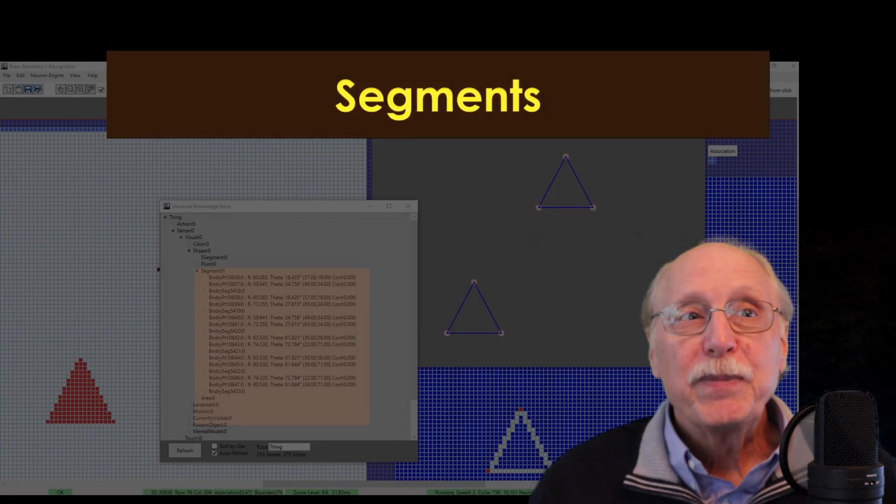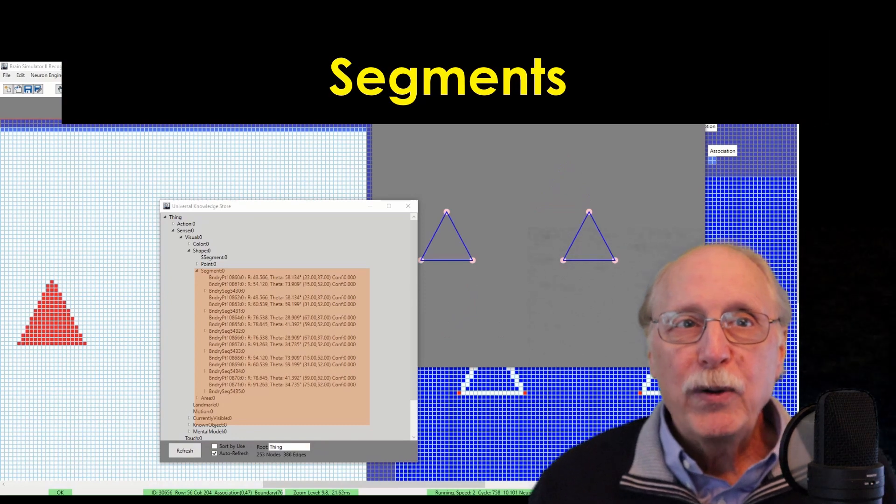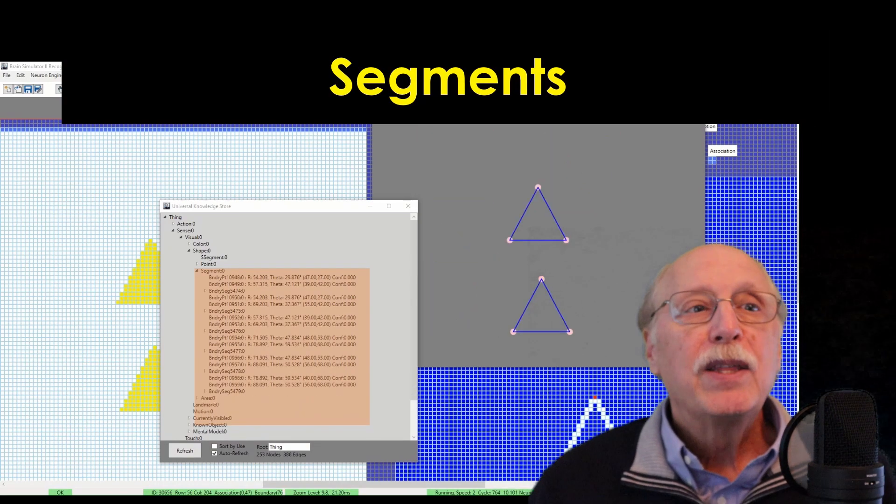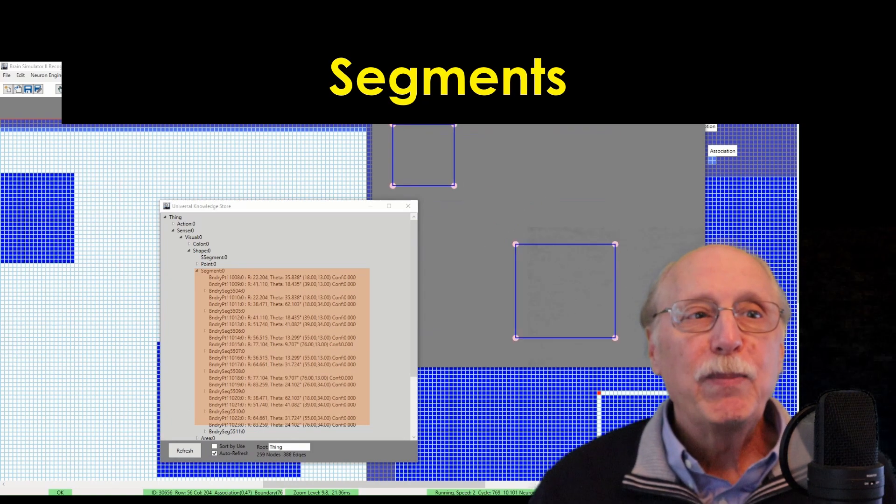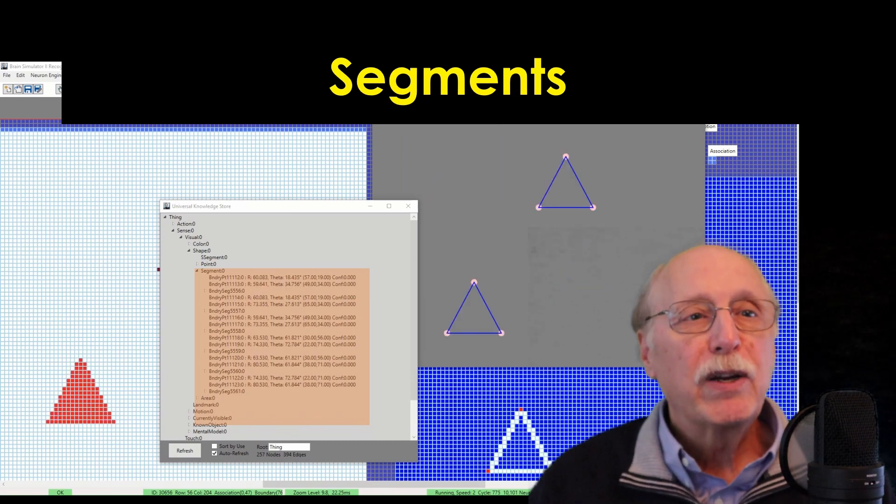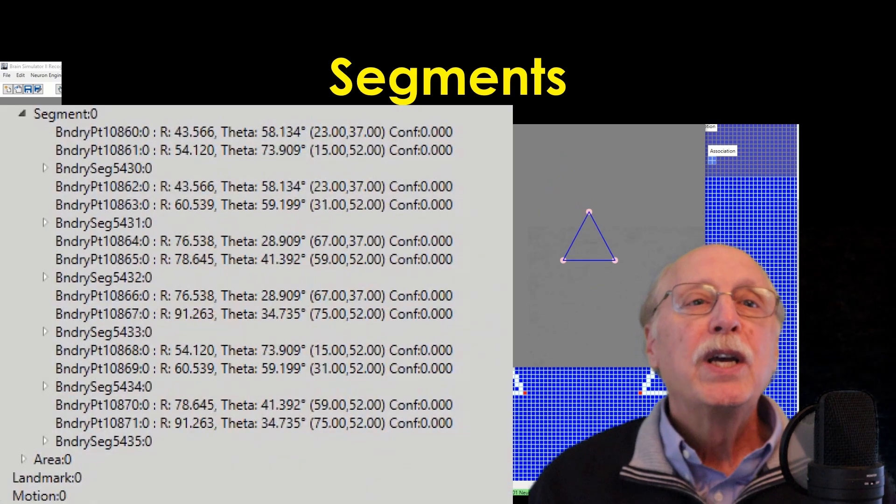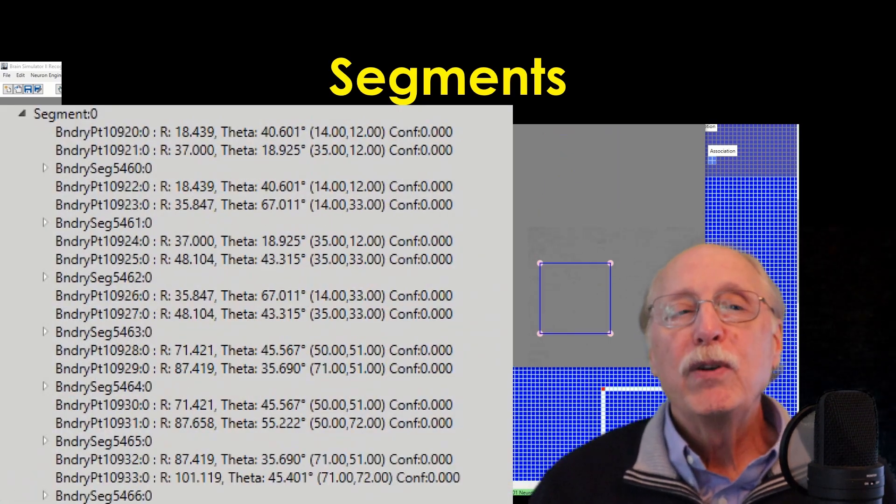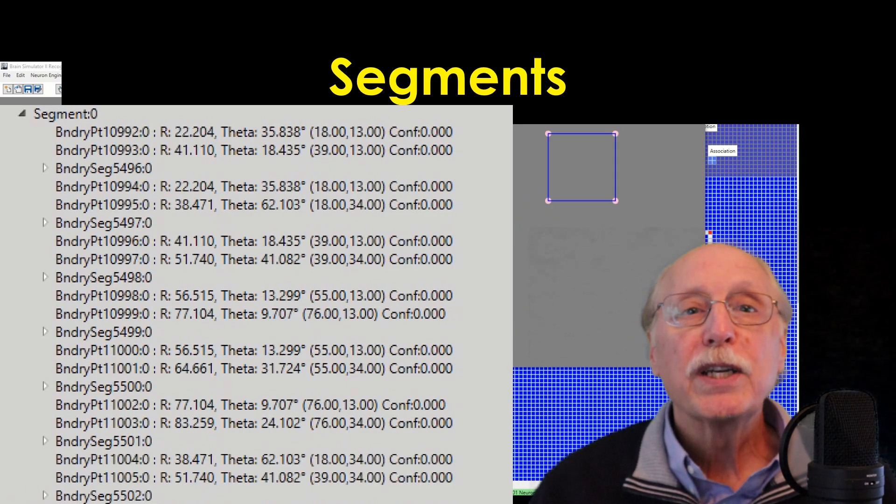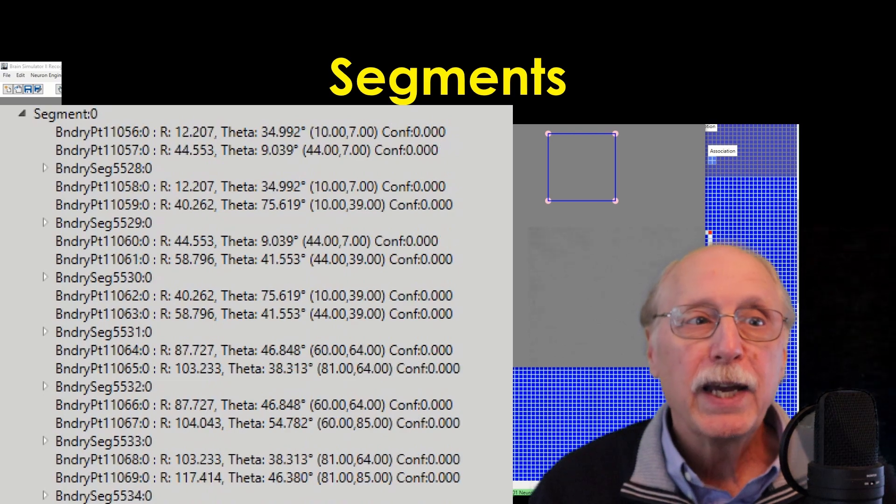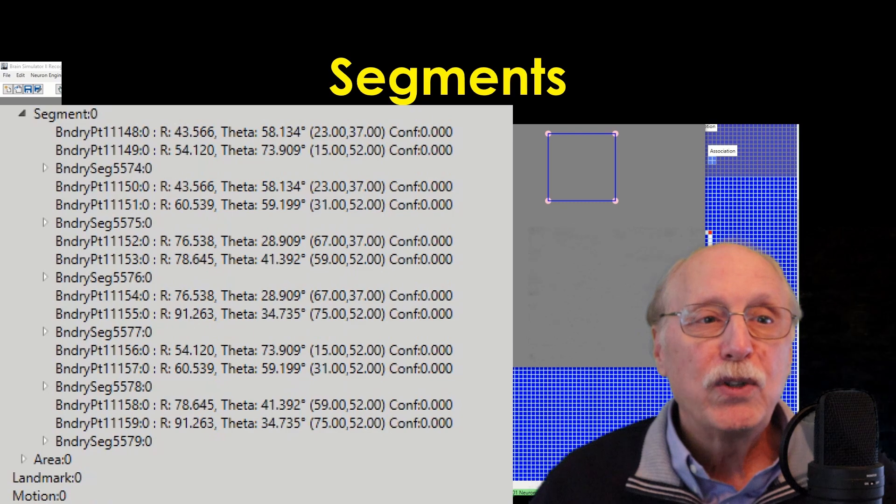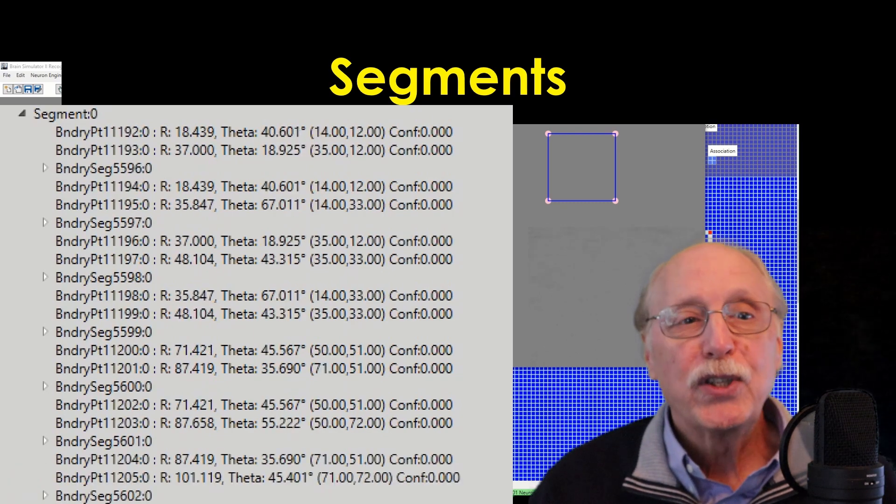Segments: Given this set of boundary and corner points from the previous step, this step finds segments in the set of boundary points. This step also marks the transition from working with individual neurons to using the graph structure of the Universal Knowledge Store. All the subsequent steps work exclusively with the UKS. In this view into the UKS, you can see the segment nodes changing as new objects are seen.